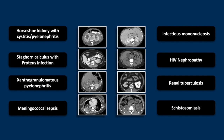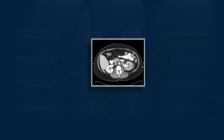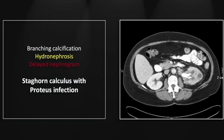Our next case is a staghorn calculus with associated proteus infection. There is a branching collecting system calcification in the left kidney which represents our staghorn calculus. There is also moderate hydronephrosis suggesting that is an obstructing calcification. Lastly, there is a delay in the nephrogram on the left suggesting that that obstruction has progressed and resulted in delayed perfusion as well.